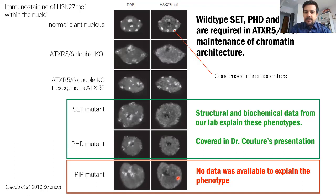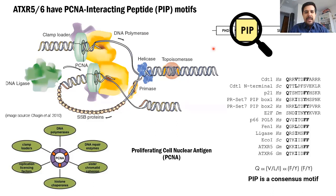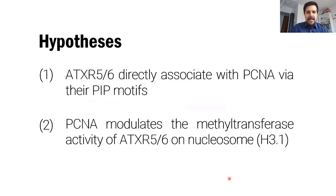So we started investigating the role of the PIP motif in the context of its anticipated DNA-related interactor, which is PCNA, shown here as a donut-shaped trimeric protein that encircles DNA. It serves as a binding platform for interaction of many DNA processing proteins. It interacts with DNA polymerases, DNA repair enzymes, histone chaperones, licensing factor, and so on. Many of the proteins that bind PCNA do so via this PIP motif, which is the PCNA interacting peptide motif, and there seems to be a consensus on the sequences in the PIP motif.